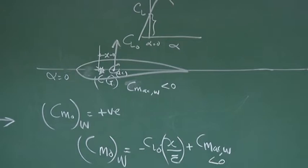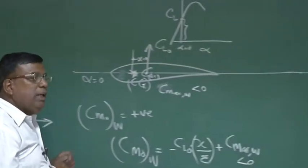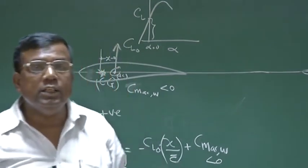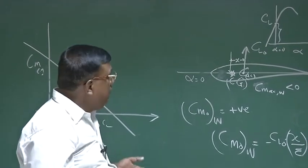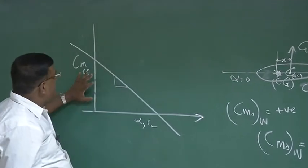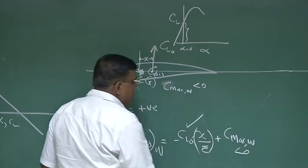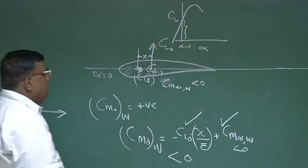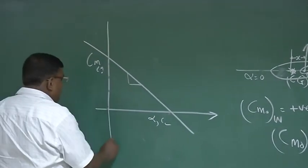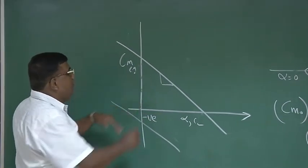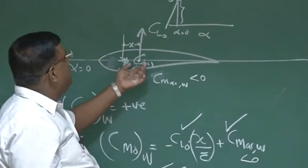See the problem: we wanted the wing to contribute a positive CM0 so that the intercept is positive. But we used a cambered aerofoil thinking it is advantageous lift-wise, and we put AC behind the CG thinking it will help static stability. It will help static stability, nobody doubts it. But the problem is, we wanted CM0 to become positive to have trim at positive alpha or CL. Both terms are negative, so the whole wing contribution towards CM0, instead of positive, is becoming negative — which a designer will not like.